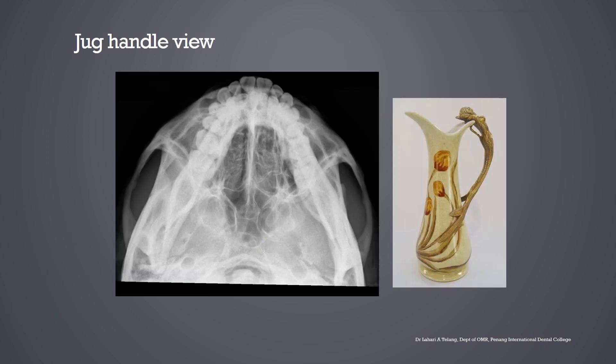This is the jug handle view where you can see the zygomatic arches like handles of a jug. When expecting a fracture — for example, where a person has been in a fist fight and the zygoma has fractured — you will see that the fractured zygoma caves in, and this is very clearly visible in this view.